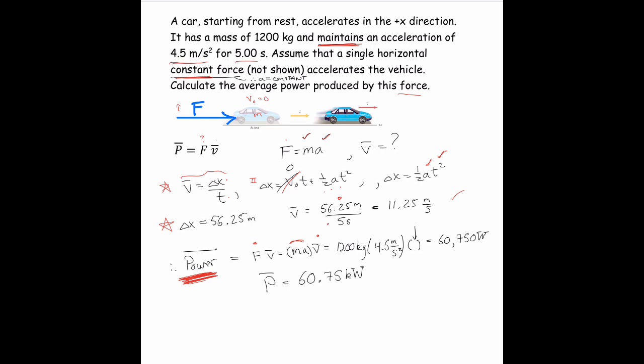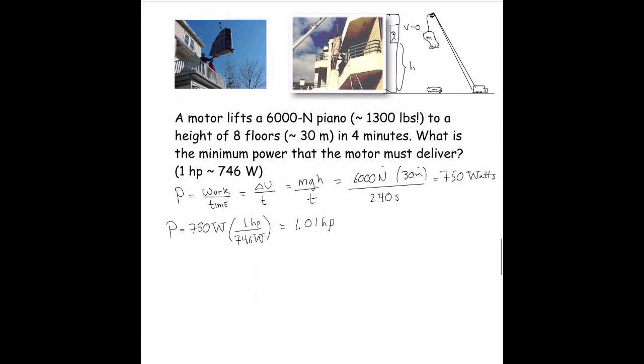If you wanted the power at some instant, you would take the known force and then whatever particular instant you want, you'd need the velocity at that instant — and that would give you the instantaneous power that the force is producing.